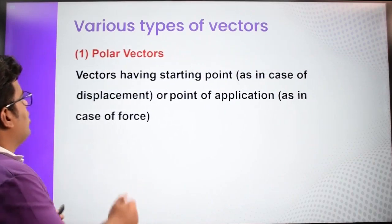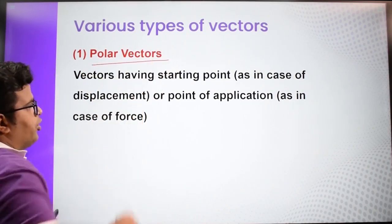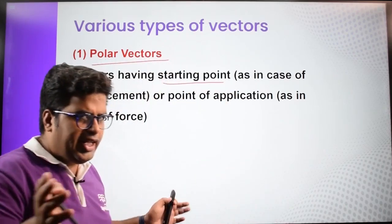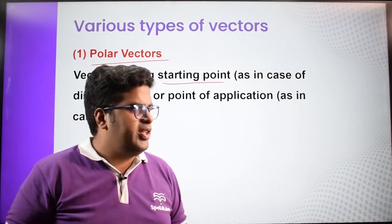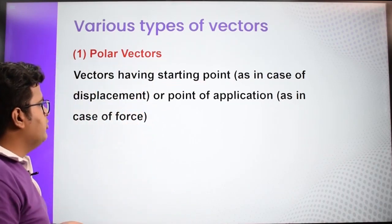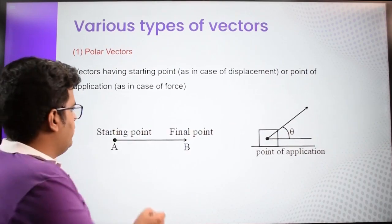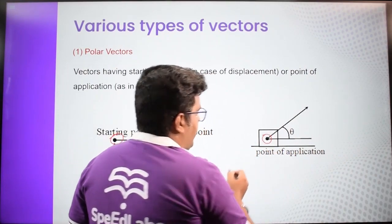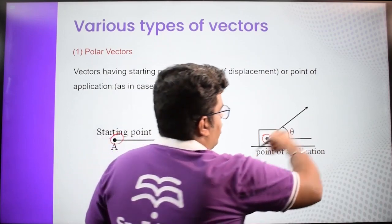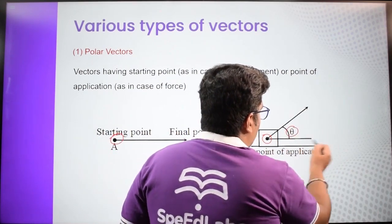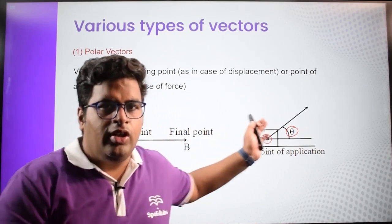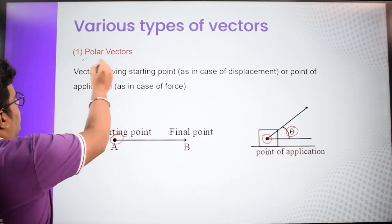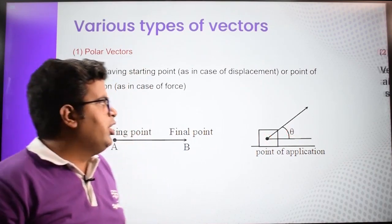The first type is polar vectors. Polar vectors are those having a starting point — like displacement. From the diagram, there is a starting point which is the point of application of the force. The vector makes an angle theta with the horizontal line. That is a representation of polar vectors.